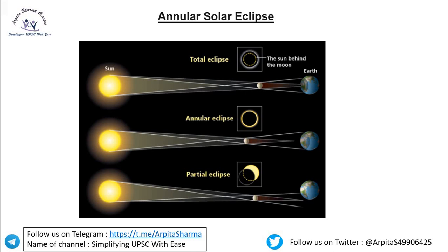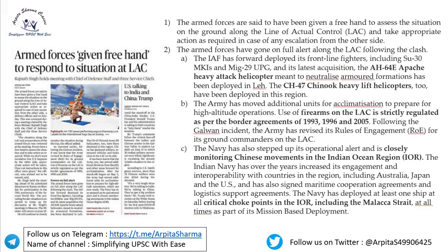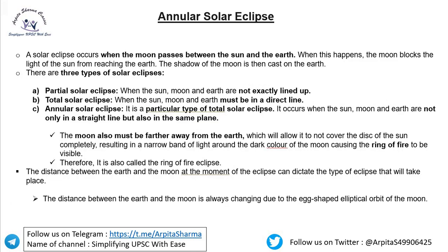In the case of annular solar eclipse, unlike total or partial eclipse, they are in the same plane and same line, and we can see the ring of fire — the sun appears as a ring. The distance between earth and moon at the moment of eclipse can dictate the type of eclipse that will take place.